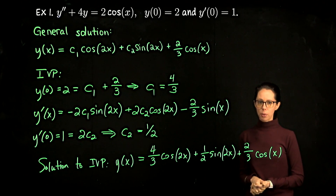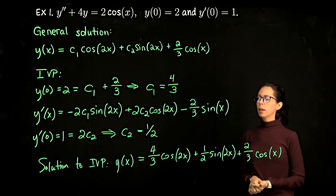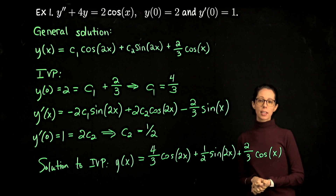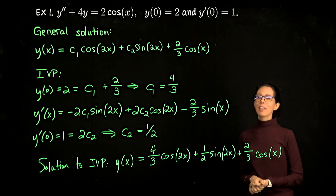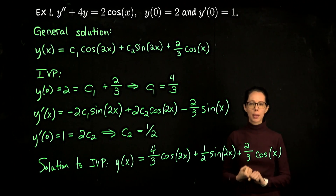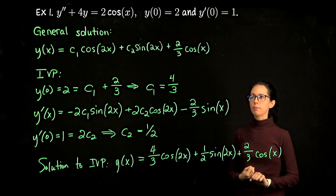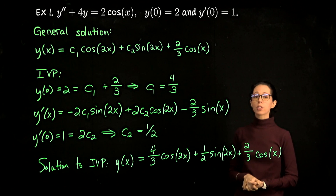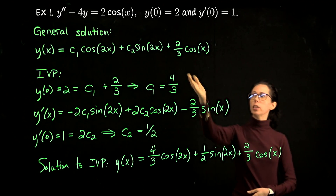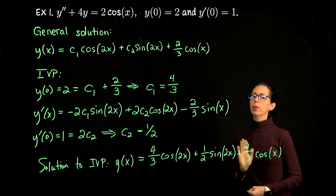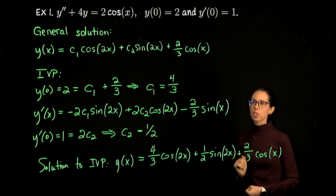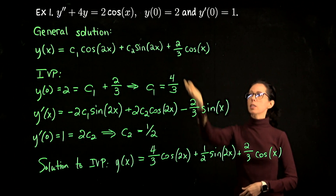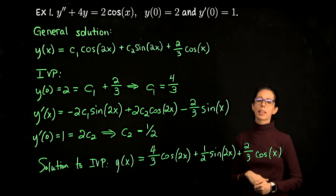We have one more example. Our second example looks a lot like this one — it has the same left-hand side, so it has the same homogeneous solution. The right-hand side is going to be an exponential function plus a constant function minus two cosine of x. Since we have two cosine of x, we're going to be able to reuse the expression we already worked out, just with a small modification.